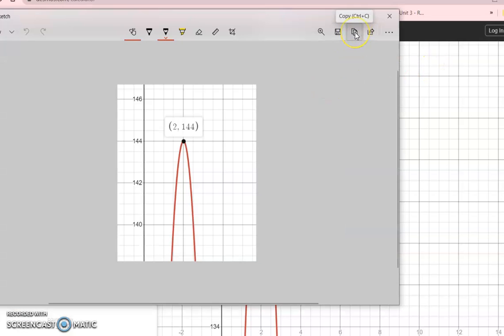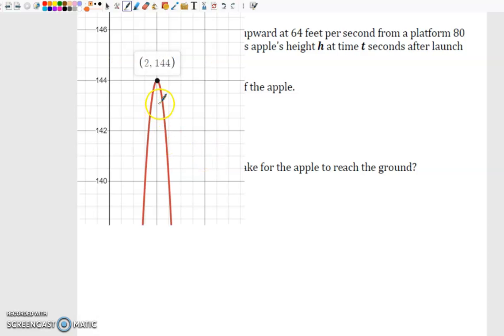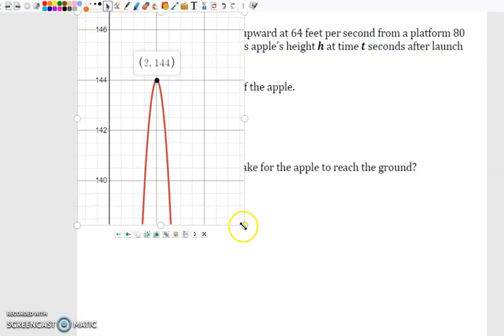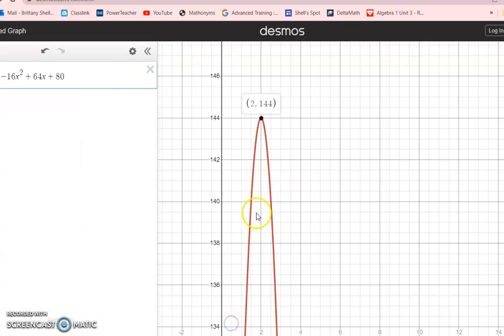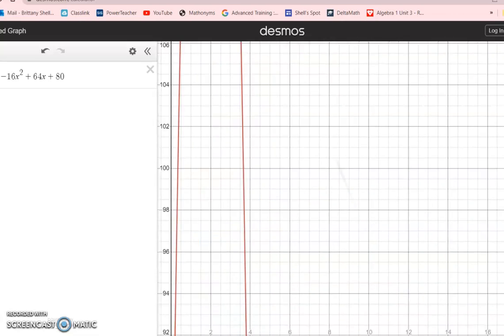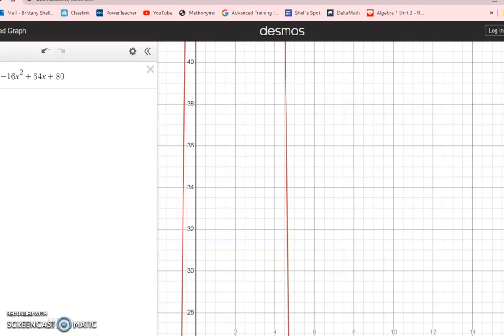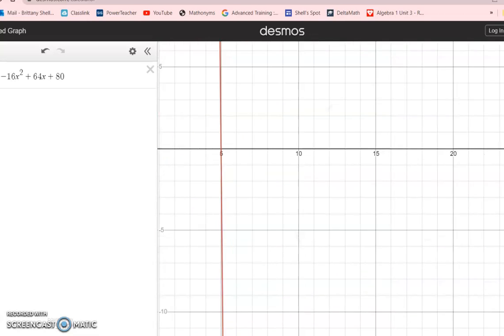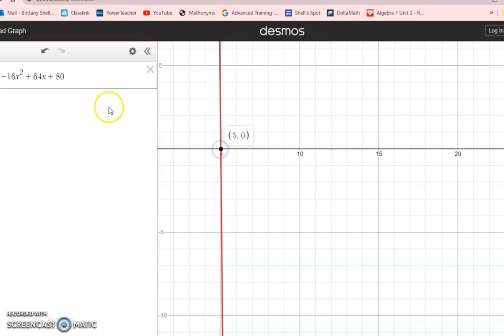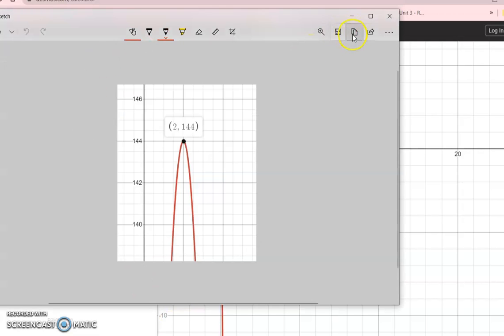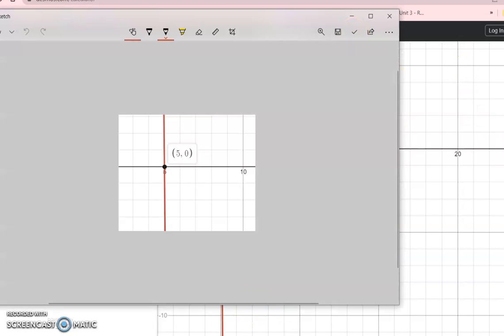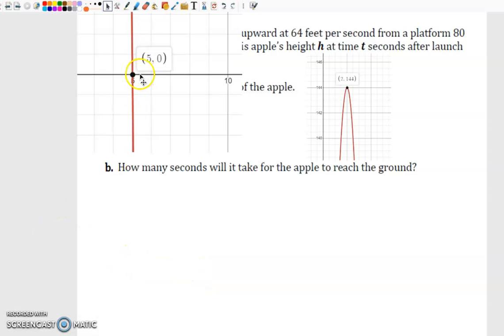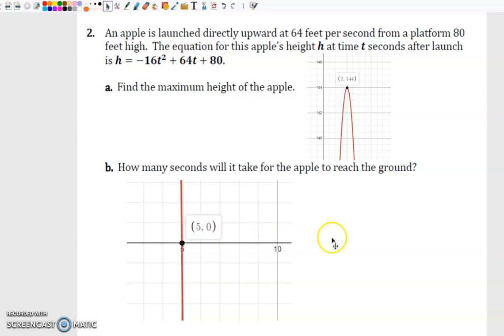Alright, so we grab that little screenshot, copy it, and we're going to paste it in here. So there's our maximum height. And then we're going to do the same thing for when it hits the ground, which we probably should have done when we started because we were already on the x-axis when we started. Alright, so we're just going to click, find our value, and that one is five. So it takes five seconds for the apple to hit the ground.